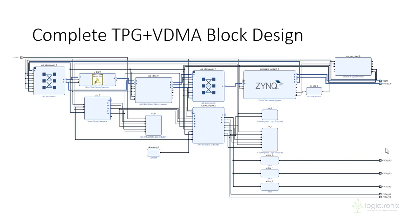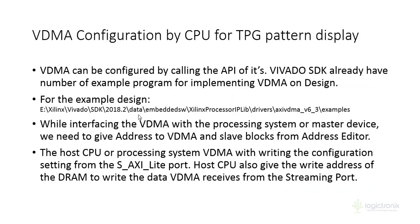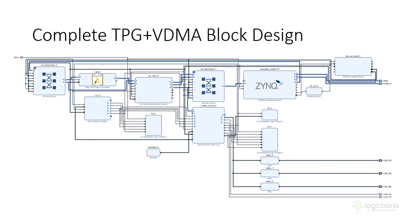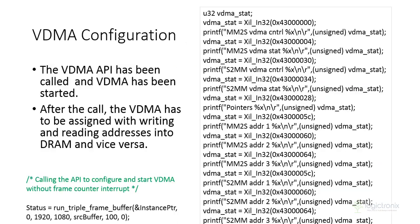There are example files inside the SDK installation directory repo. You can navigate to that location to find a TPG API that can be instantiated in your SDK program. When working with this TPG plus VDMA design, you need to first configure the TPG and then configure the VDMA from the SDK program. This design works by direct monitoring by the Zynq processing system. More details will be covered in the lab session.